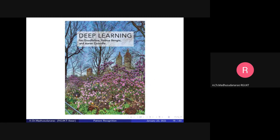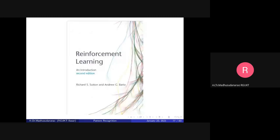If you want to go beyond this course and learn trending topics, they will be covered in this textbook: 'Deep Learning' by Ian Goodfellow, which is up to date till 2016. And if you want to go further into automation, you can also have the book 'Reinforcement Learning' by Sutton and Barto.